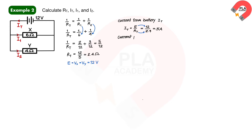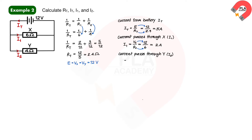The current through resistor X is calculated by substituting V_X equals 12 and R_X equals 6, giving I_1 equals 2 amperes. The current through resistor Y is calculated by substituting V_Y equals 12 and R_Y equals 4, giving I_2 equals 3 amperes. You see that I_1 plus I_2 equals I_T equals 5 amperes.